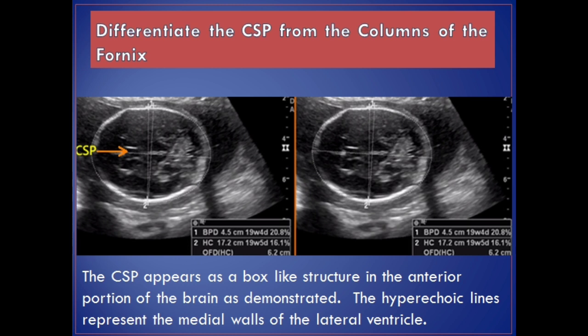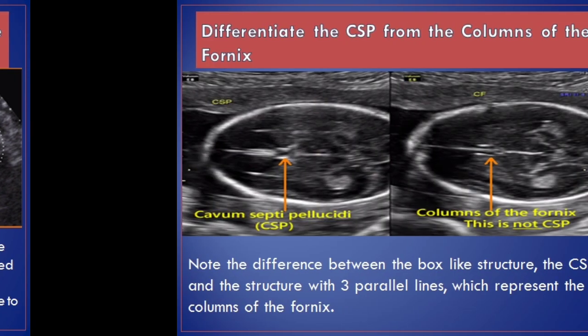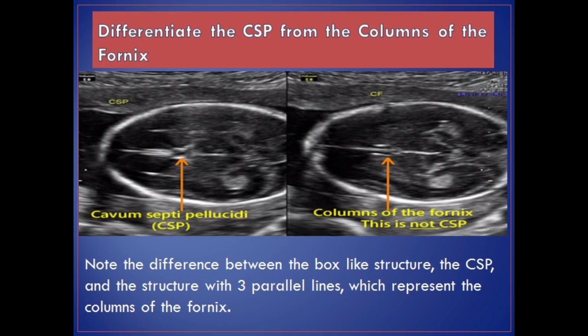The CSP appears as a box-like structure in the anterior portion of the brain. The hyperechoic lines represent the medial walls of the lateral ventricle. The three-line structure is not the CSP and represents the columns of the fornix. The fornix represents paired nerve columns, which are located just inferior to the CSP. The transaxial view when the fornix is seen suggests that the transducer plane is just inferior to the proper plane to obtain the CSP. Note the difference between the box-like structure, the CSP, and the structure with three parallel lines, which represent the columns of the fornix.